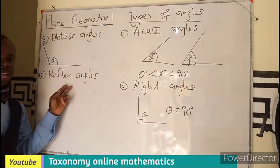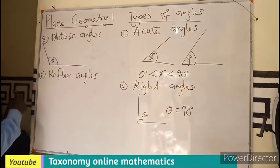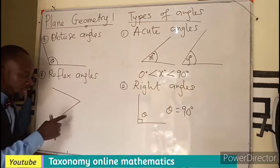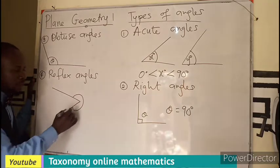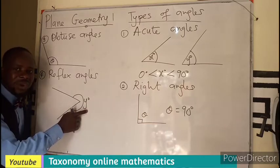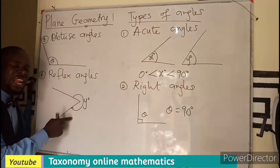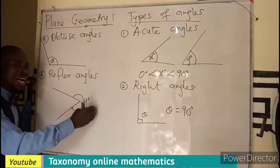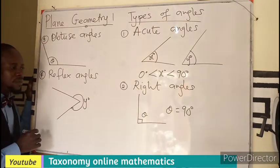We also have reflex angles. This angle is bigger than 180 degrees. So if I have this angle and I am not interested in this side but rather I am interested in this side — meaning angle Y — if I am looking for this angle, this angle is bigger than 180 and it is also less than 360. So all angles bigger than 180 but less than 360 are what we call reflex angles.